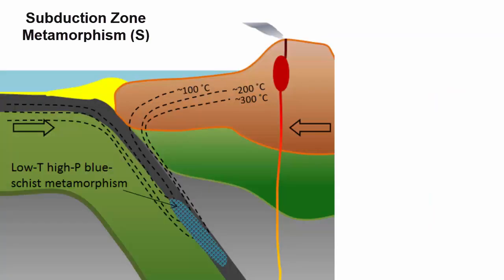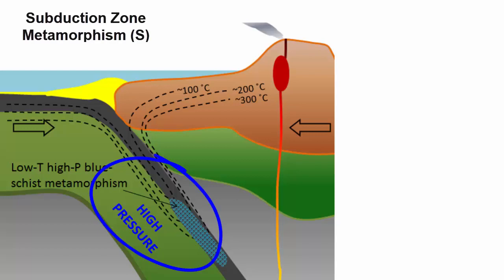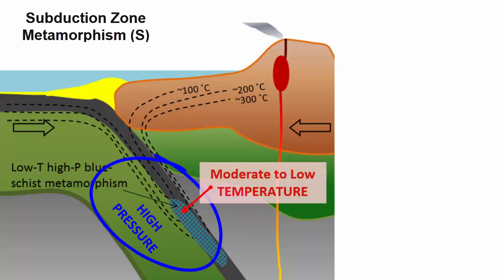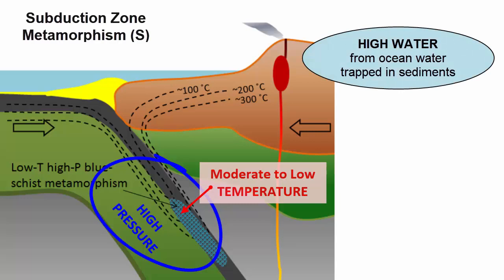What happens at subduction zones? Pressures are also quite high here and get higher the deeper the plate sinks into the mantle. But the temperatures do not rise at the same rate because the subducting plate is cold and insulated and sinks faster than temperatures can equilibrate. So subduction zone metamorphic settings are characterized by high pressures but low to moderate temperatures. Water content can be quite high because of the high amount of water absorbed by sediment and rocks in contact with ocean water for potentially hundreds of millions of years while the subducting plate was being pushed across the oceans.